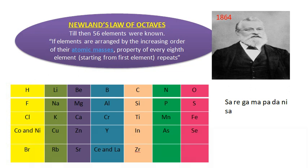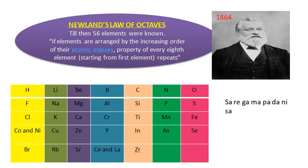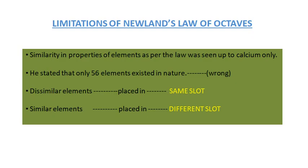Another drawback was that he placed similar elements in different slots, going against his own law. Iron resembles cobalt and nickel in properties, but he placed iron, cobalt, and nickel very far from each other. Elements with similar properties should have been placed in the same column, but they were placed far apart. These were the drawbacks of Newland's Law of Octaves.